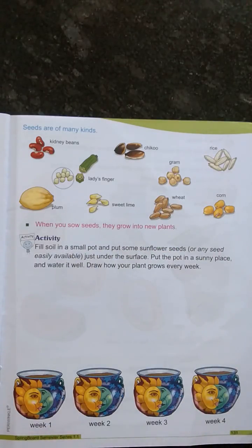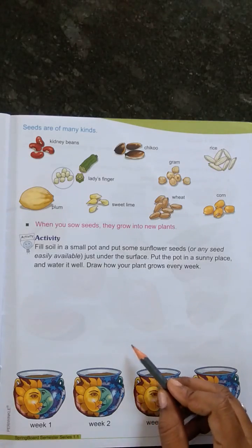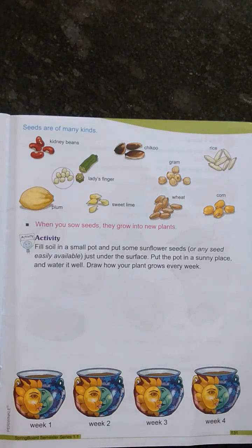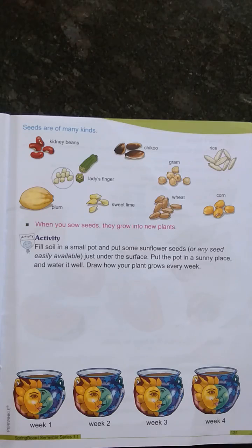When you sow seeds, they grow into new plants. Now for an activity — fill soil in a small pot and put some sunflower seeds, or any seeds easily available, just under the surface. Put the pot in a sunny place and water it well. Draw how your plant grows every week.